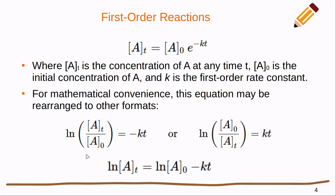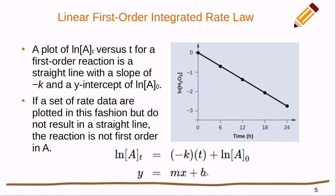For mathematical convenience this equation can be rearranged into other formats. We can have one with the natural log, and then we can use our log rules to flip the ratio and clear the negative. From there we can use log rules to derive a linear form that is particularly useful for determining the order of a reaction from integrated rate law and concentration-time data. We're going to make a plot where y is the natural log of the concentration at any given time and x is time.